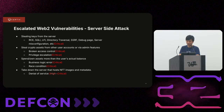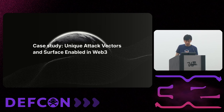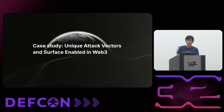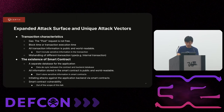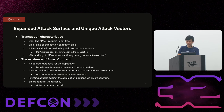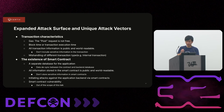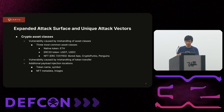In Web3, anything that can touch money is a critical severity finding. The most important impact is removing or stealing users' money. Web2 attack vectors can have higher severity in Web3. Additionally, unique to Web3 is that if backend applications incorrectly process transactions, it's possible to initiate attacks against backend components through smart contract interactions, and if access control across different chains is handled incorrectly, that can also be exploited.